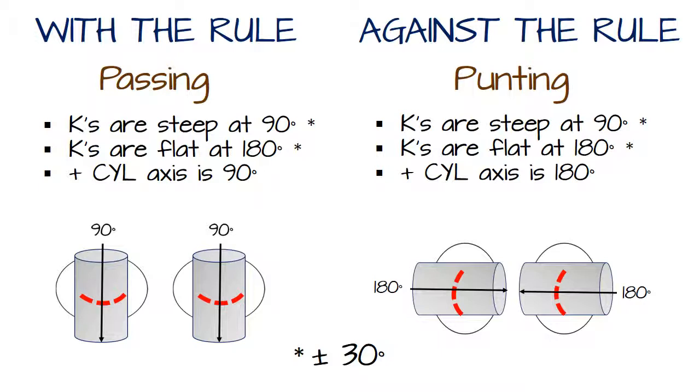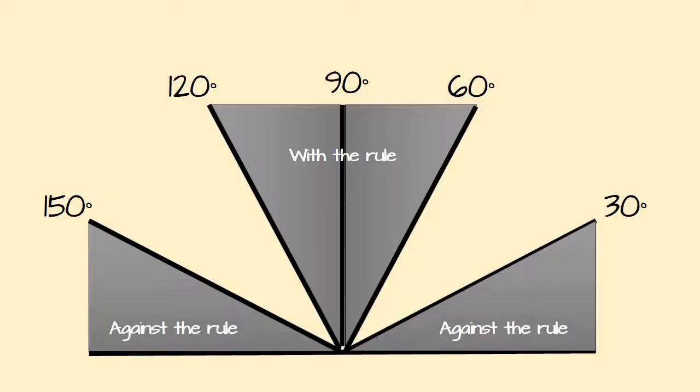Notice how I have plus minus 30 degrees at the bottom there. All that means is that it doesn't have to be exactly at 90 and exactly at 180. There's a leeway of plus minus 30 degrees on either side. So there's a range that's considered with the rule and against the rule. And astigmatism patients that don't fall into those ranges have what's known as oblique astigmatism.